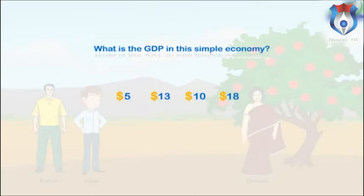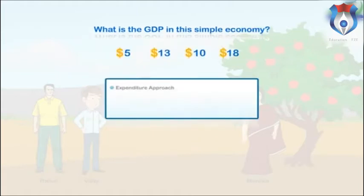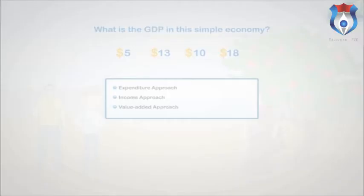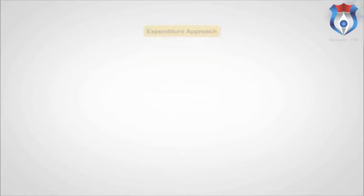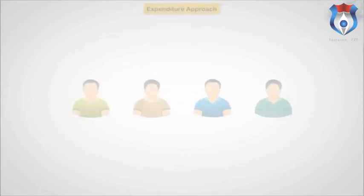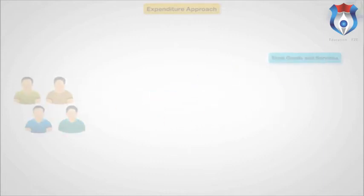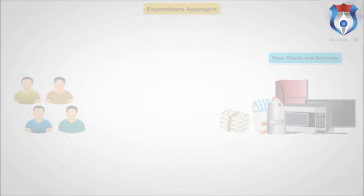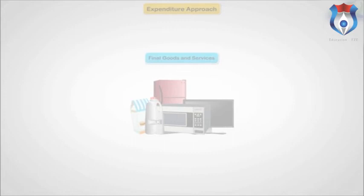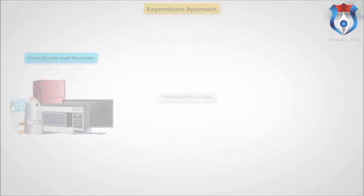We use three approaches to compute GDP: the expenditure approach, the income approach, and the value added approach. To compute GDP using the expenditure approach, we add the amount of money spent by buyers on final goods and services. The words 'final goods and services' are important in computing GDP, because not all goods are final goods — some goods are intermediate goods.